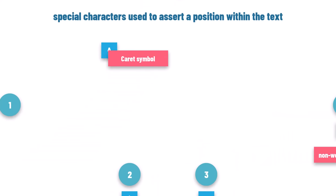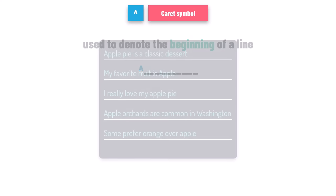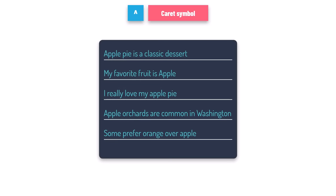The caret symbol is used to denote the beginning of a line. When you place caret before your pattern, it will only match if the pattern is at the very start of the line. For example, given lines each containing the word apple, the pattern ^apple will return only the two words where apple is at the beginning of the line — all other apple words not at the beginning will not be in the result.